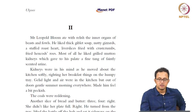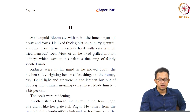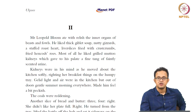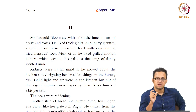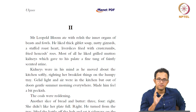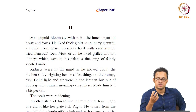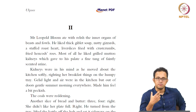'He liked thick giblet soup, nutty gizzards, a stuffed roast heart, liverslices fried with crustcrumbs, fried hencods' roes. Most of all he liked grilled mutton kidneys which gave to his palate a fine tang of faintly scented urine.' Look at the way in which excretion and consumption — different kinds of bodily functions — are not just foregrounded but almost celebrated. They are described in such graphic, visceral detail that it is meant to shock you, sometimes to move you in repulsion, sometimes in disgust.